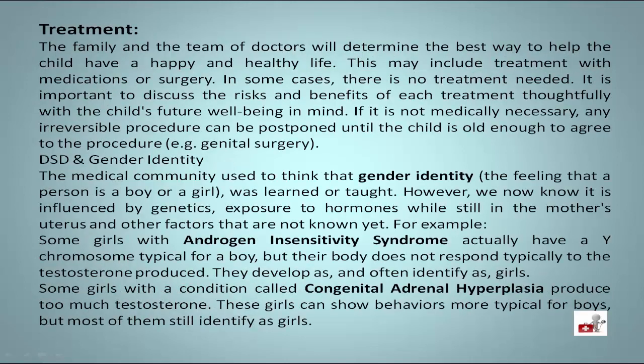Treatment. The family and the team of doctors will determine the best way to help the child have a happy and healthy life. This may include treatment with medications or surgery. In some cases, there is no treatment needed. It is important to discuss the risks and benefits of each treatment thoughtfully, with the child's future well-being in mind. If it is not medically necessary, any irreversible procedure can be postponed until the child is old enough to agree to the procedure, for example genital surgery.